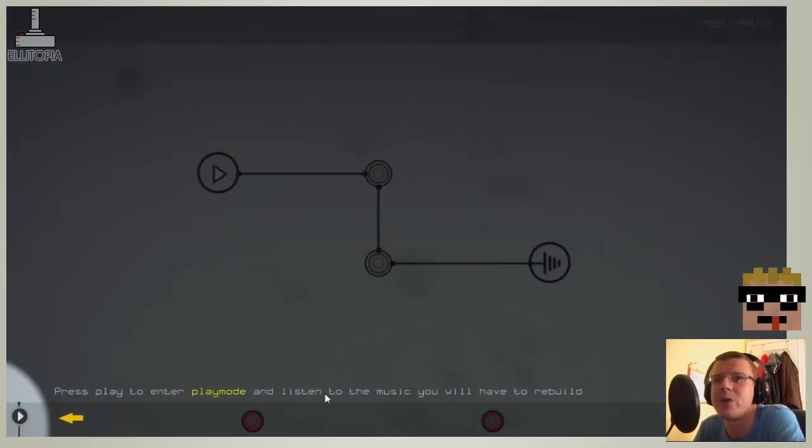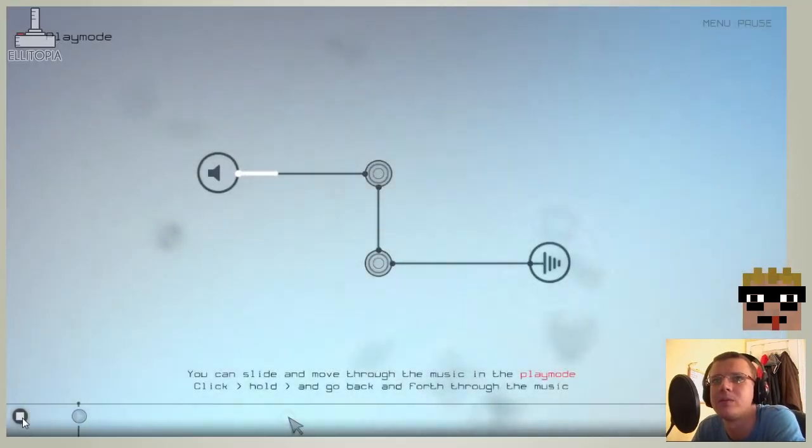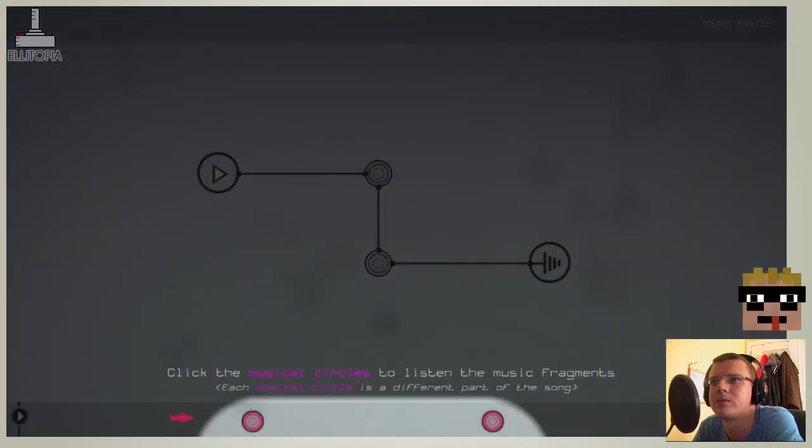Press play to enter play mode and listen to the music you will have to rebuild. You can slide and move through the music with the play mode. Click and hold and go back and forth through the music. Right, click the musical circles to listen to the music fragments, typo. Each musical circle is a different part of the song.